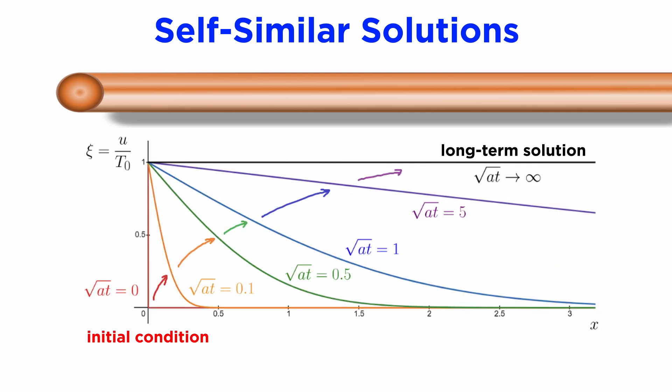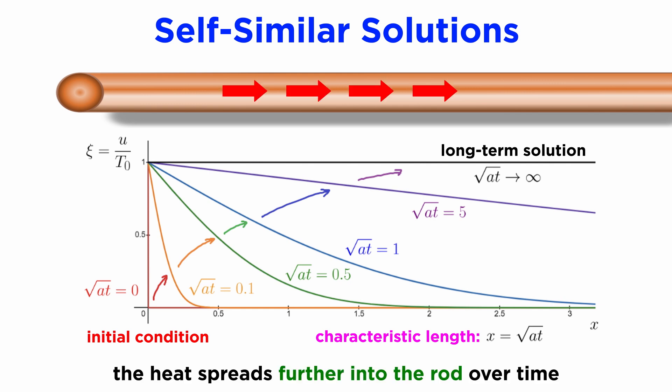If we plot our real temperature u against our real length x for some different times t, we see that the curve starts bunched up around x equals zero for very small t, and then steadily spreads itself out as time increases. Most importantly, the length scale that we found, square root of at, is what determines roughly how far our solution extends into the rod.